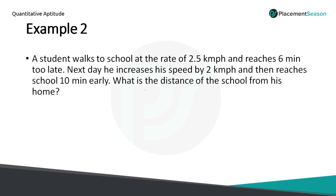Let's understand the problem first. Consider the school time is 10 am. If the student walks at 2.5 km per hour, he reaches at 10:06. Next day, he increases his speed to 2.5 plus 2, which is 4.5 km per hour, and reaches the school 10 minutes early — meaning he arrives at 9:50.